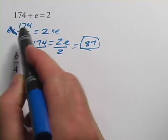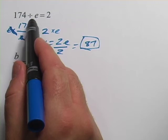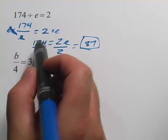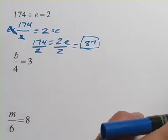So half of 174 is 87. 174 divided by half of itself is going to be 2. This is a really tricky one and it may take a while to wrap your head around it.